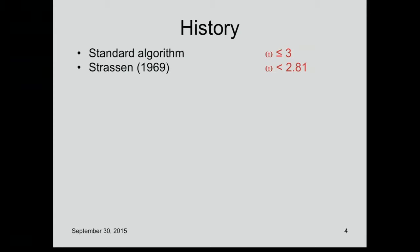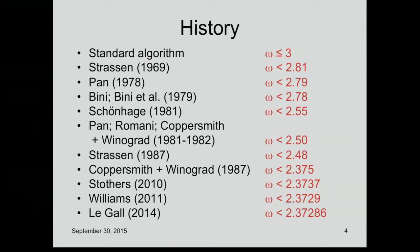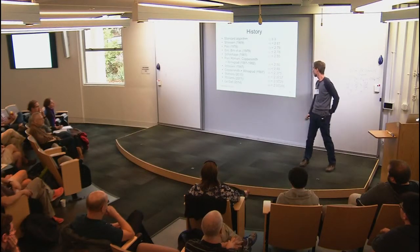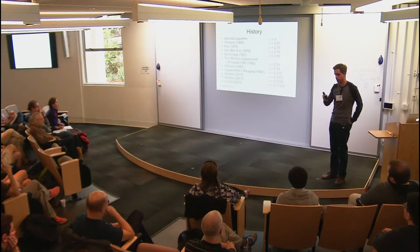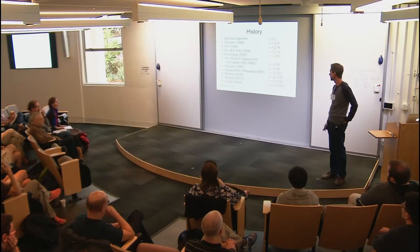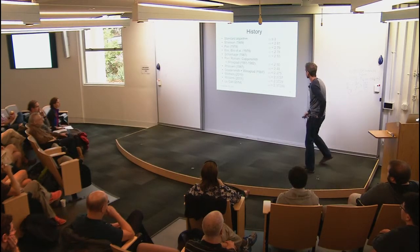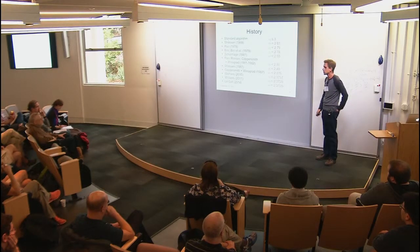In terms of Ω, the standard algorithm shows Ω ≤ 3—not very exciting. Strassen showed it's less than 2.81, and then there's a whole sequence of further improvements. Some made large improvements; in recent years there's been a resurgence of small improvements over the Coppersmith-Winograd bound of about 2.375, which had stood for a long time. Virginia is one of those really pushing that forward.